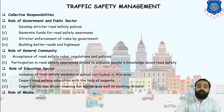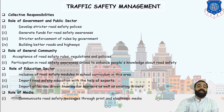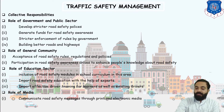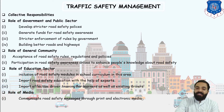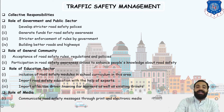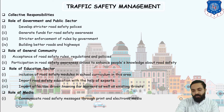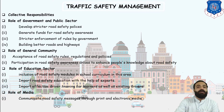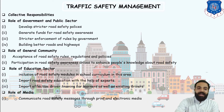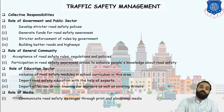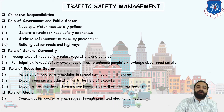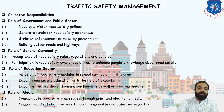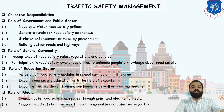The role of media is to communicate road safety messages through print and electronic media. For example, radio RJs frequently talk about road safety rules — wear a helmet, drive in the proper lane, wear a seat belt. This is a way of communicating traffic rules and regulations, and supporting road safety initiatives through responsible and objective reporting.